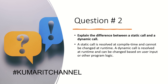For example, with an insurance company: a COBOL program might be used to process claims data. A dynamic call could be used to retrieve information from a customer database based on the claim number entered by the user, whereas a static call might be used to retrieve fixed information such as the company's contact information, which doesn't change — that is a static call.